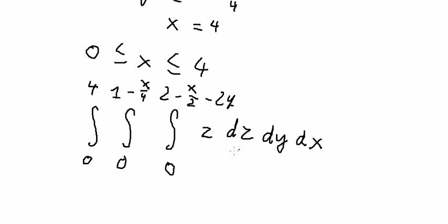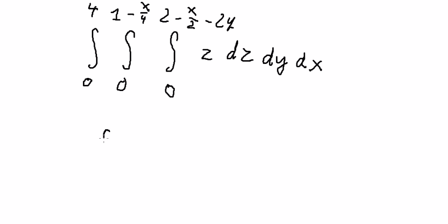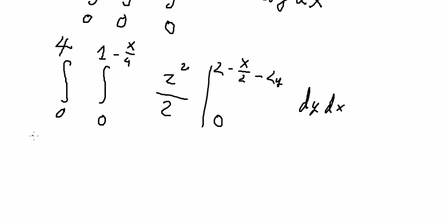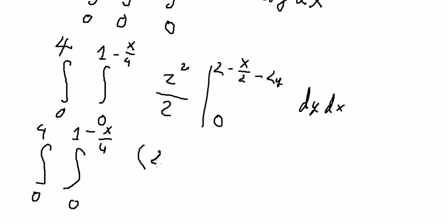Now we calculate the triple integral. Integrating with respect to z first, we get z squared over 2 evaluated at the boundaries. This gives us the quantity: 2 minus x over 2 minus 2y, all squared, over 2.